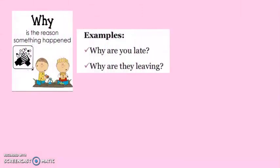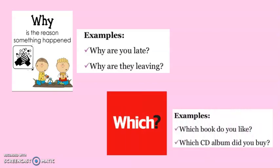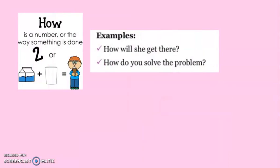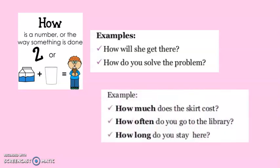'Why' is used for asking about reasons. 'Which' is used to ask about things, especially choices with a small number of possible answers. 'How' is used to ask in what way, and it can be combined with many words — like 'how much' for quantities, 'how often' for manner, 'how long' for characteristics, and so on. Overall, 'how' is used to ask in what way.